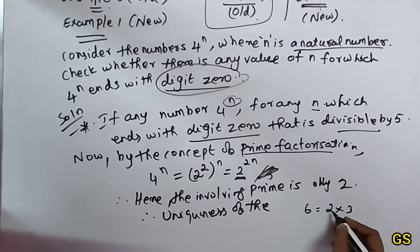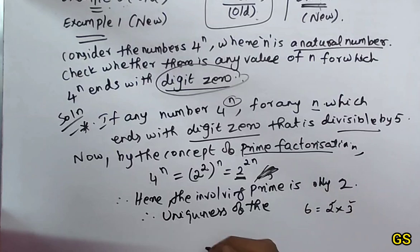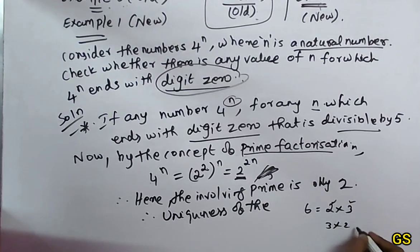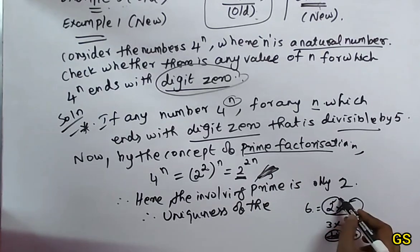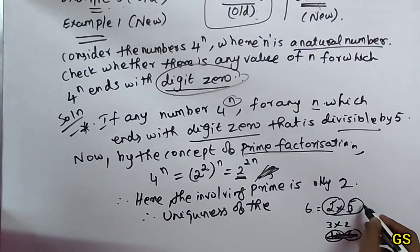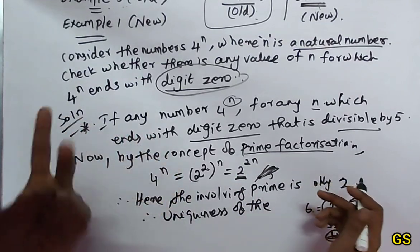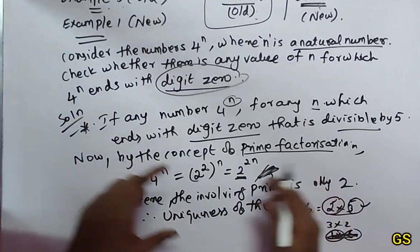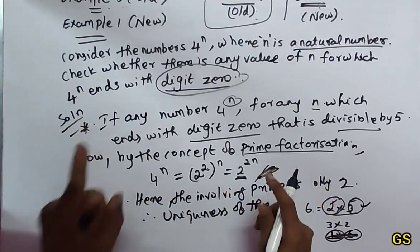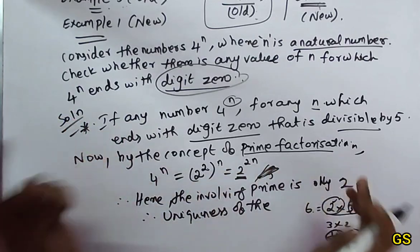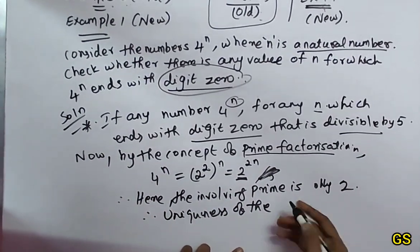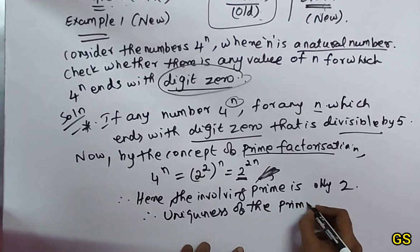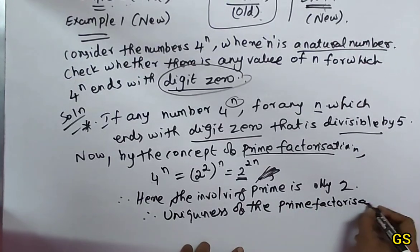For example, 6 is 2 into 3 — it is prime factorization. 6 equals 3 into 2, or 1 into 6 — but the prime factorization is unique: 2 and 3. That is one unique prime factorization. So, prime factorization is unique.